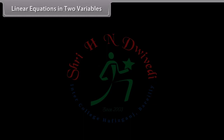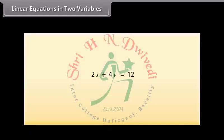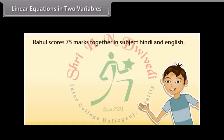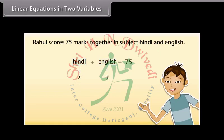Linear equations in two variables. A linear equation can have more than one variable. Here we will study about linear equations in two variables. Let's take an example. Rahul scores 75 marks together in subject Hindi and English. The marks of neither subject are known — there are two unknown quantities. Let us use X and Y to denote them. So the marks scored in Hindi is X and the marks scored in English is Y. So X plus Y is equal to 75 is the required equation. This is an example of a linear equation in two variables.